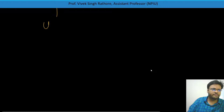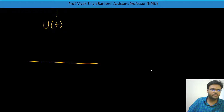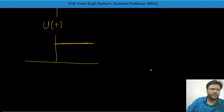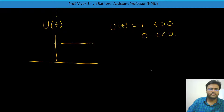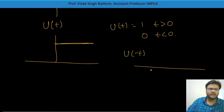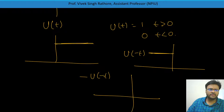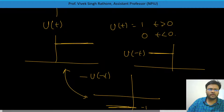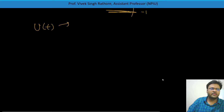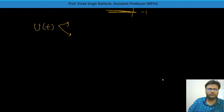For the unit step signal u(t): u(t) is 1 for t greater than 0 and 0 for t less than 0. When you do u of minus t you get the time-reversed version. These two are not equal. And minus u of minus t is also not equal to u(t). So the unit step signal u(t) is neither even nor odd.